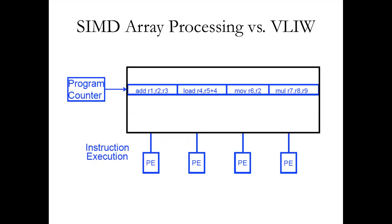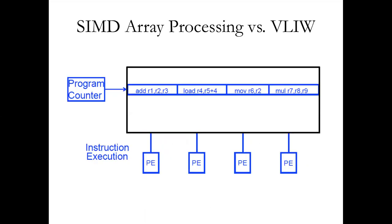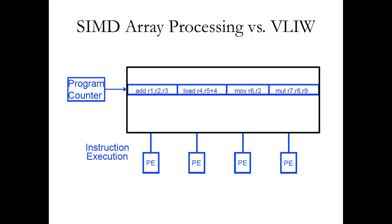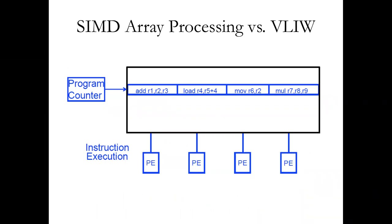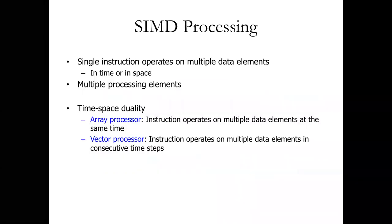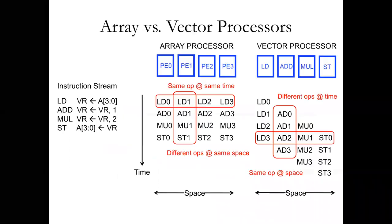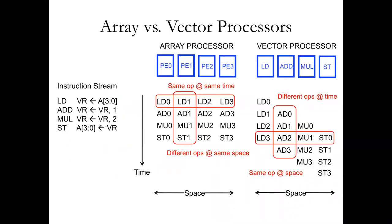We were talking about SIMD last time. SIMD is just a type of parallelism — we've already seen with pipelining that we can parallelize the individual parts of our computation, so we have our load phase, our register read phase, etc. What SIMD gives us is the ability to do multiple operations — this is instruction level parallelism.